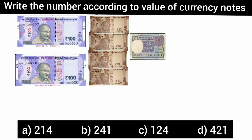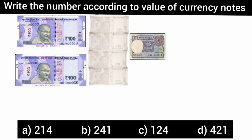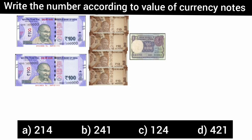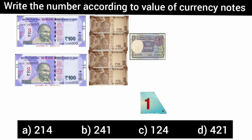Next question. According to the value of currency notes given below, write the number. In the picture, there are hundred rupees note, ten rupees note and one rupees note shown. Children, for ones place — one rupee note; for tens place — ten rupees notes; and for hundreds place — hundred rupee notes are used. How many one rupee notes are there? Very good. There is only one one-rupee note, so it is one ones.